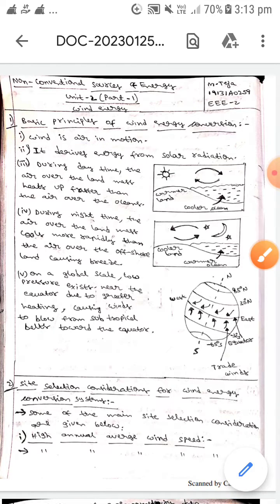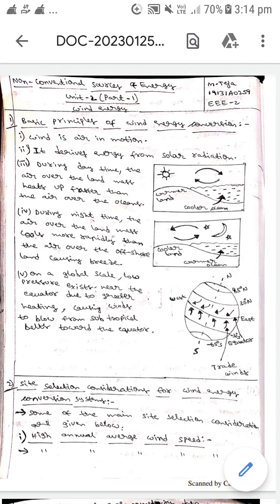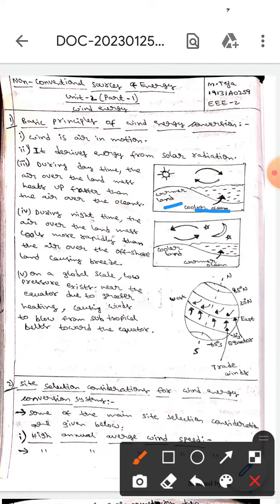If you observe here, during the daytime the air over landmass heats up faster than the air over the oceans. So there will be warmer land and cooler ocean.